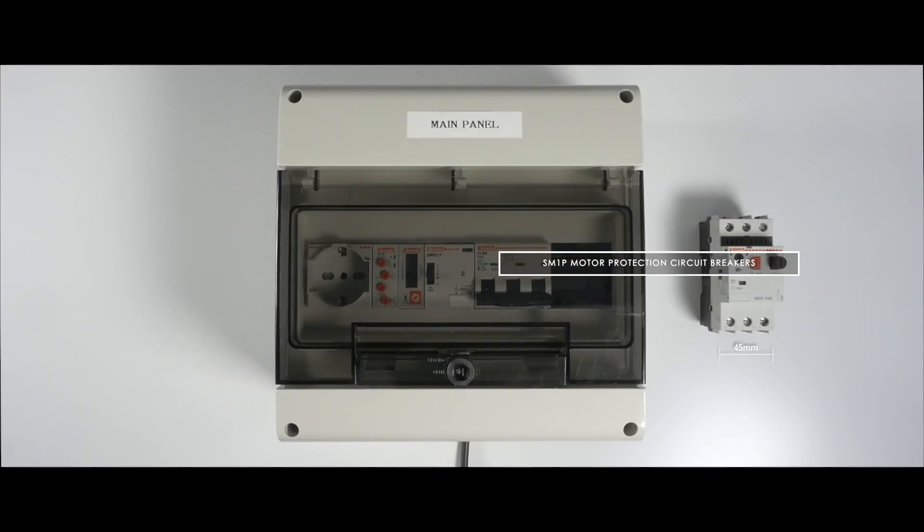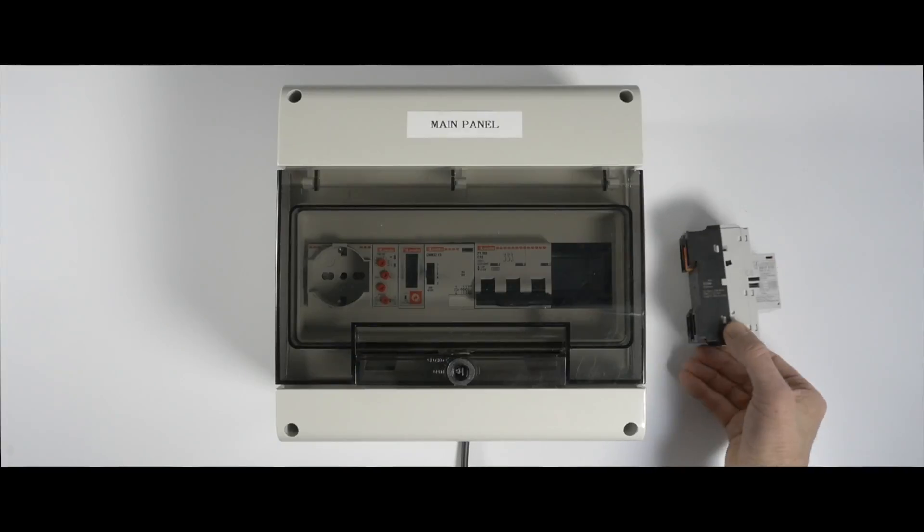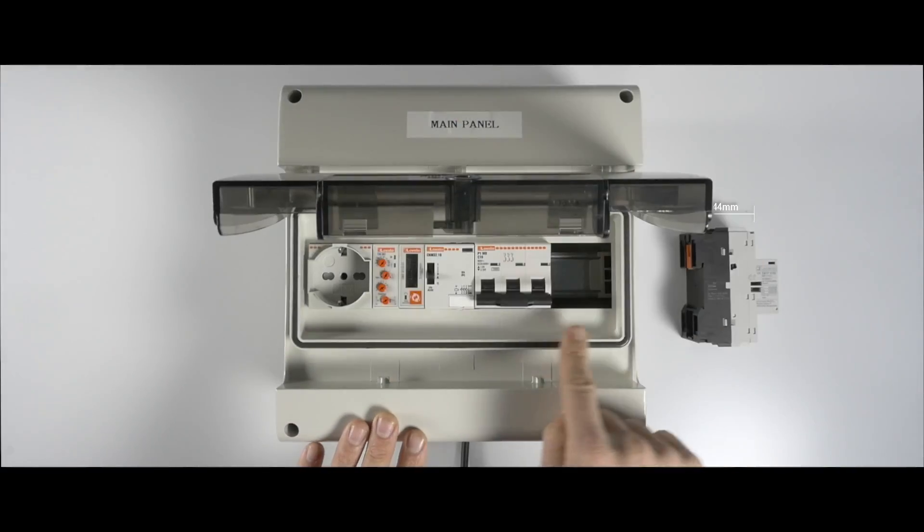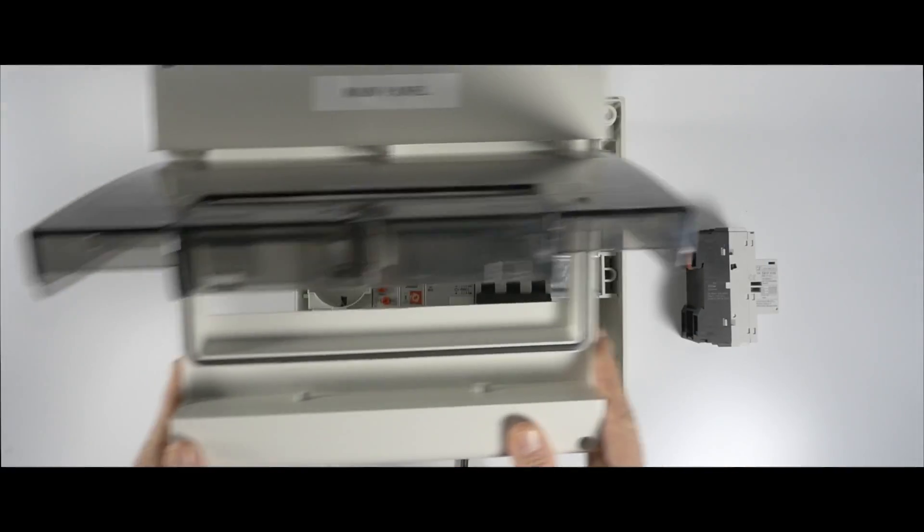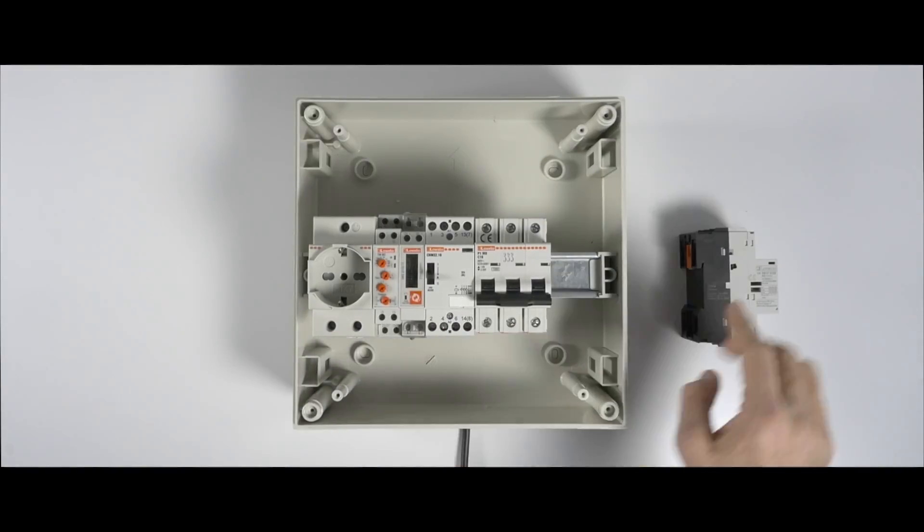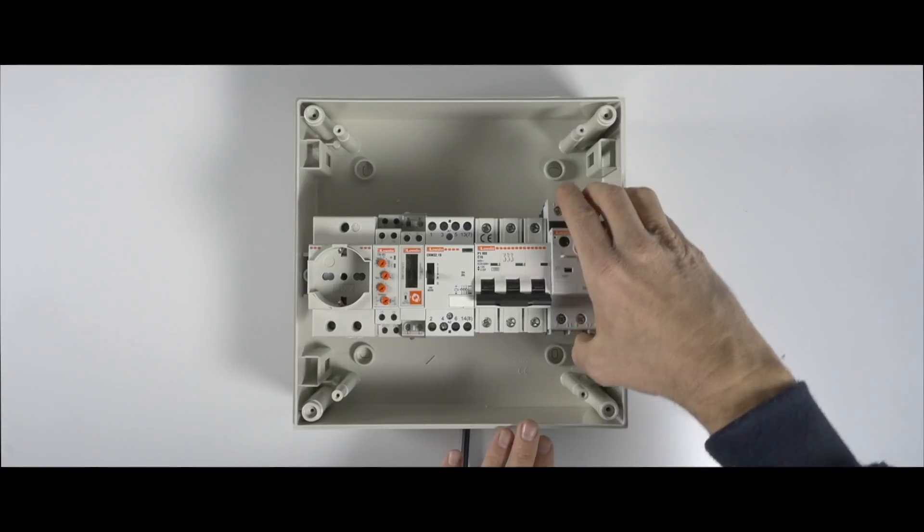SM1P motor protection circuit breakers are small and ideal for any brand of modular containers on the market. The consistent and compact design of the whole line of Lovato Electric's modular products make all installations neat and efficient.